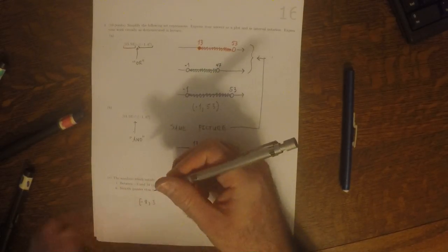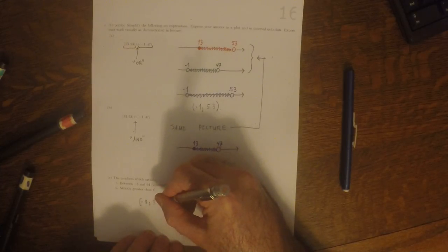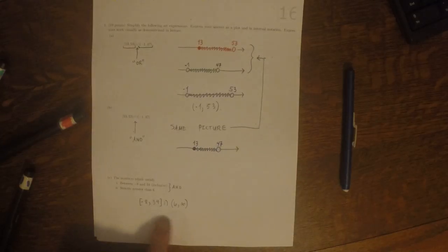So negative 8 and 34 are included. And then intersection, strictly greater than 6. That's what we want to compute.